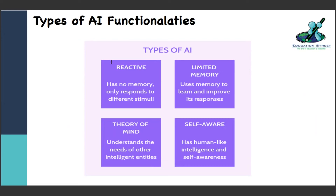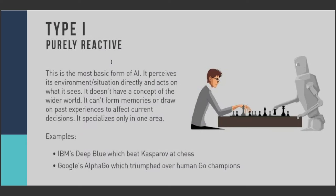Let's move to AI functionalities. There are four different types: one is Reactive, second is Limited Memory, third is Theory of Mind, and the fourth is Self-Awareness. The Reactive type is the most basic form of AI - it perceives its environment and situation directly and acts on what it sees. As you see a person playing chess with a robot - the robot has only that much understanding of what movement is happening on the chess board. It has no further intelligence because it can do only one task.